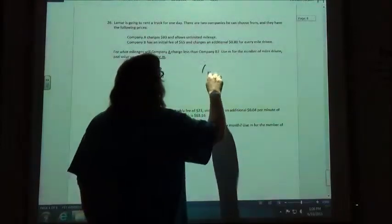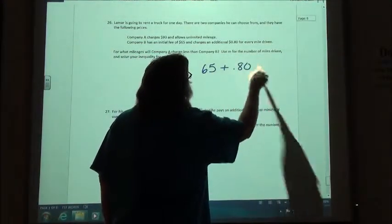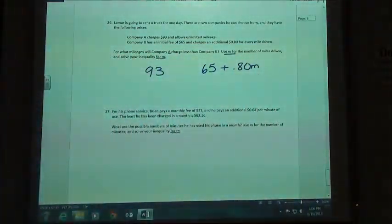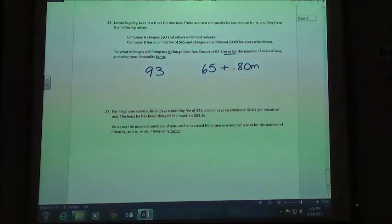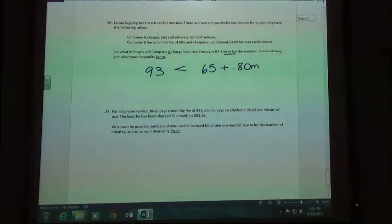Company B has an initial fee of $65 and charges $0.80 for every mile driven. Use M for the number of miles driven. So what mileages will Company A charge less than Company B? I want A to be less than B again and so I just put less of them on there.